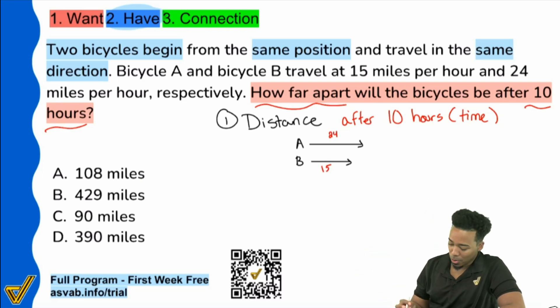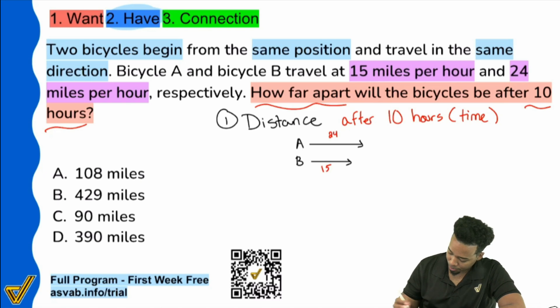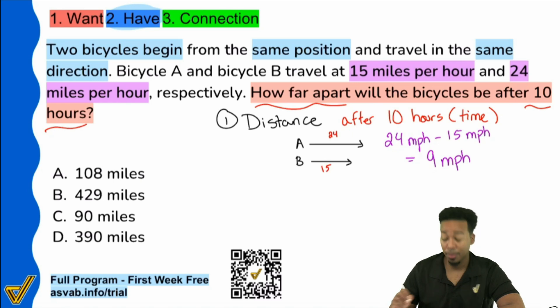So going back here, we are going to subtract these rates. And I know that they are rates because we see the word per, 15 miles per hour, 24 miles per hour. Connecting miles and hours tells you that it's a rate. So with that said, we are going to take the 24 miles per hour minus the 15 miles per hour. And that's going to equal a combined rate of nine miles per hour. So they are growing apart at a rate of nine miles an hour. Every hour they grow nine miles apart. So that's it.